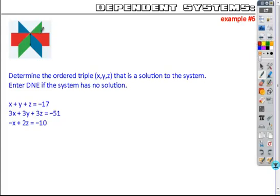A dependent system is where the different equations are going to all meet at the same line, meaning you're going to have an infinite number of solutions. Depending on what x is, the y and z will follow from that, but there will be an infinite number of points.